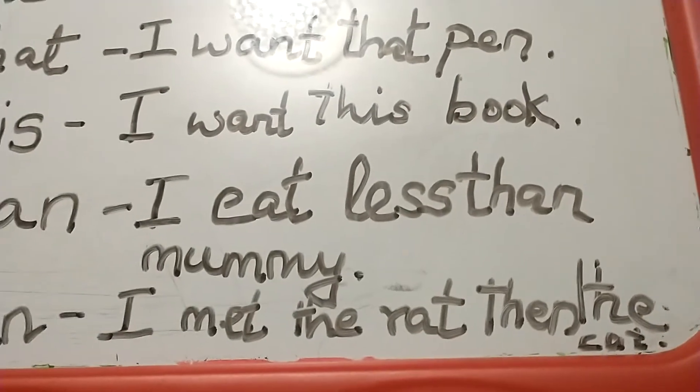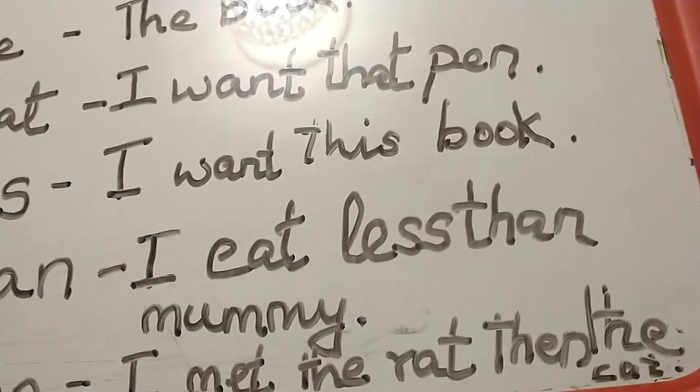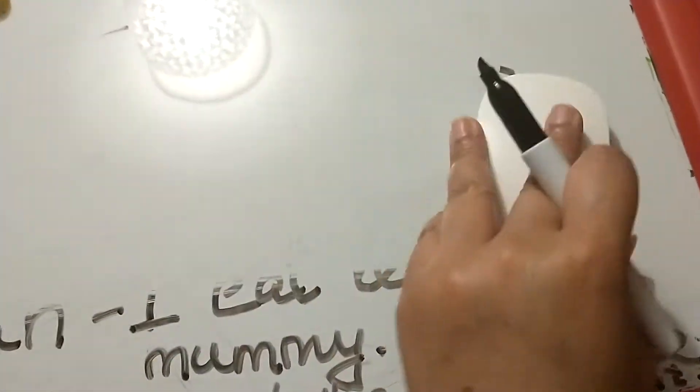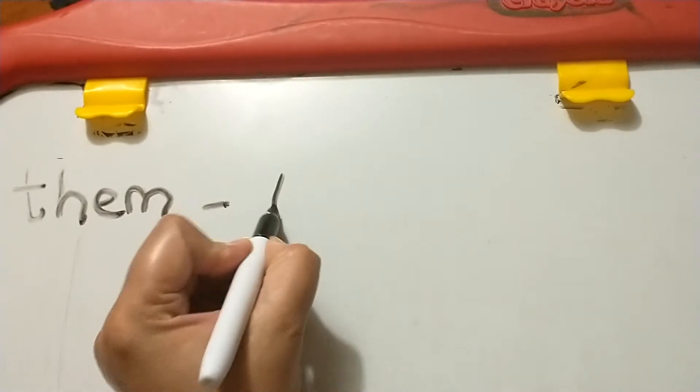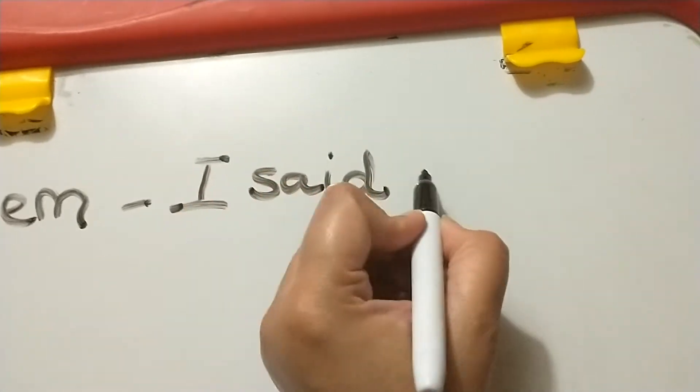Let's rub these sentences out and write the remaining words with sentences. The next word is THEM: 'I said no to them.'